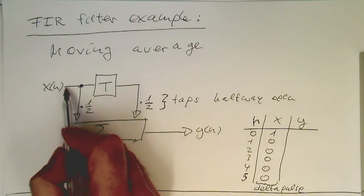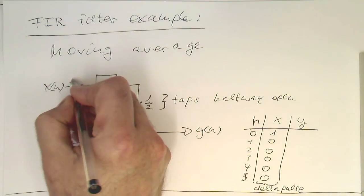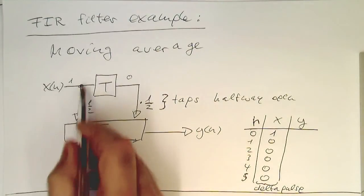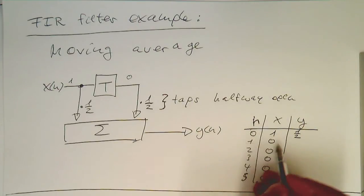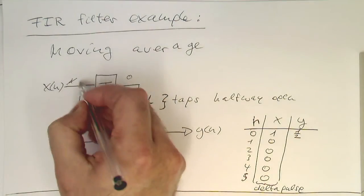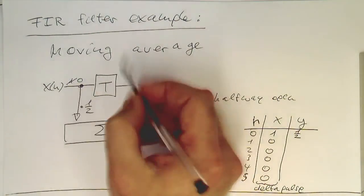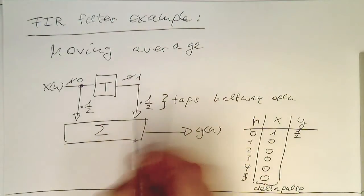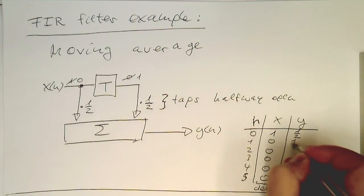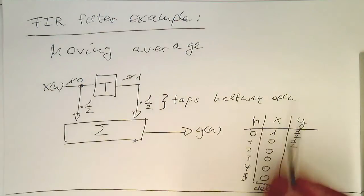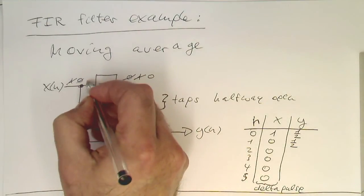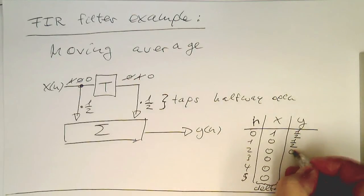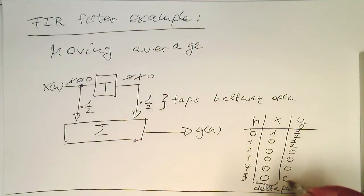So the 1 here is obviously directly showing up here. At the first time step we get the 1 here, and this is still 0, so this gives us just a half. At the next time step, x has become 0 again. But then the 1 has progressed to this point, so we're getting half here again. Then the next time step, the 1 is replaced again by 0, so we're getting 0, 0, 0, and 0 again. So our impulse response is essentially half and half.